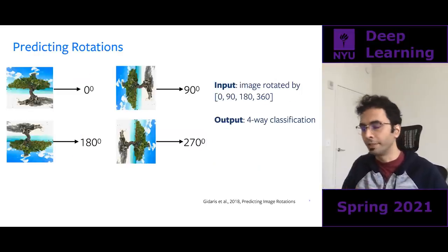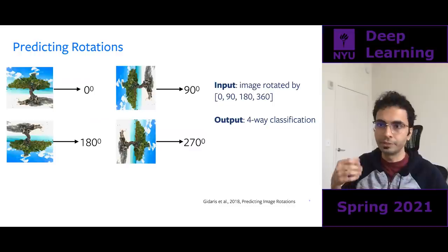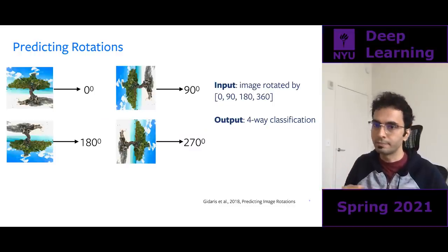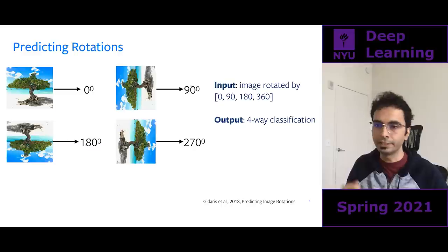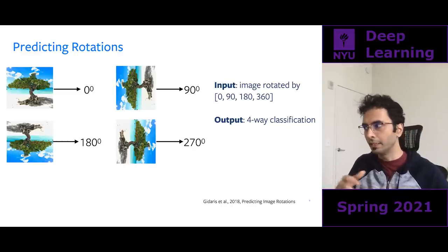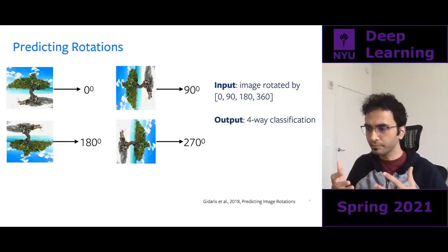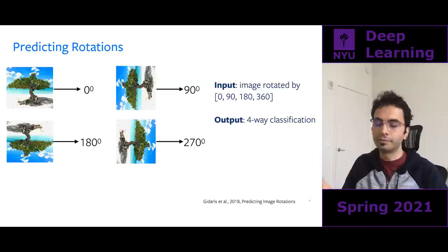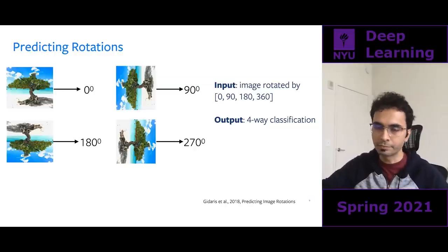Another fairly popular task is predicting rotations. You take an image and apply one of four rotations — 0, 90, 180, or 270 degrees — and output a four-way classification to predict the rotation type.